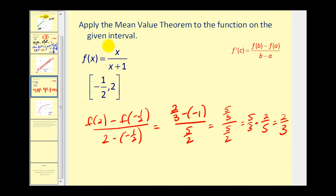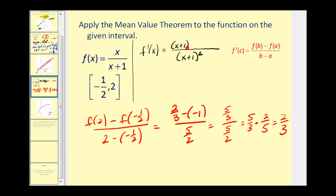So now we want to know when the derivative would equal two-thirds, because that's where the tangent line would have the same slope. To find the derivative, we'll apply the quotient rule. We start with the denominator squared. Then we have the denominator times the derivative of the numerator, which is one, minus the numerator times the derivative of the denominator, which is one as well. So the derivative equals one divided by (x plus one) squared. We want to know when this equals two-thirds. This is a proportion, so we can perform cross products: two times the quantity (x plus one) squared must equal three.